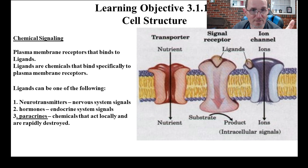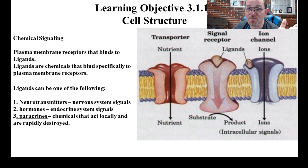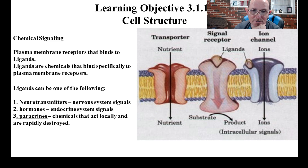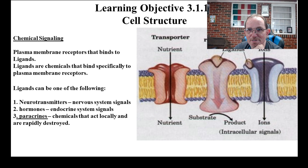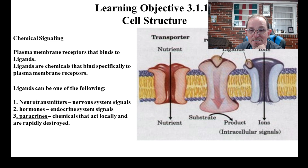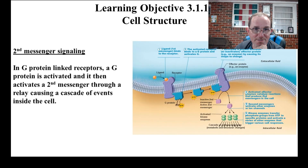Neurotransmitters are ligands; hormones can be too. Some of them will go straight through the plasma membrane and go to the nucleus. Paracrines are just locally acting signaling molecules. I want to give you a good overview but I don't want to get into A&P 2 topics — that's when we start talking about the endocrine system.